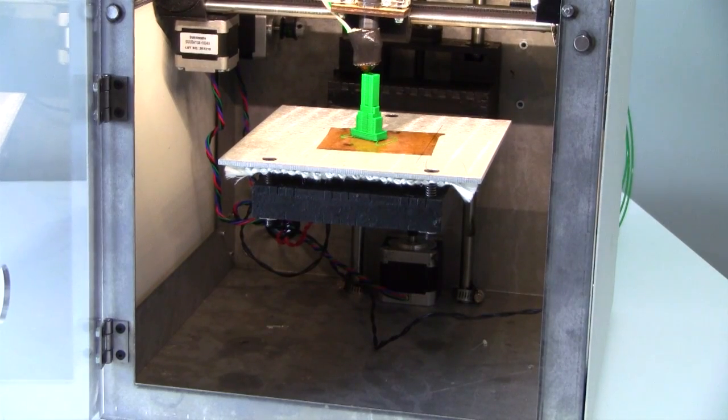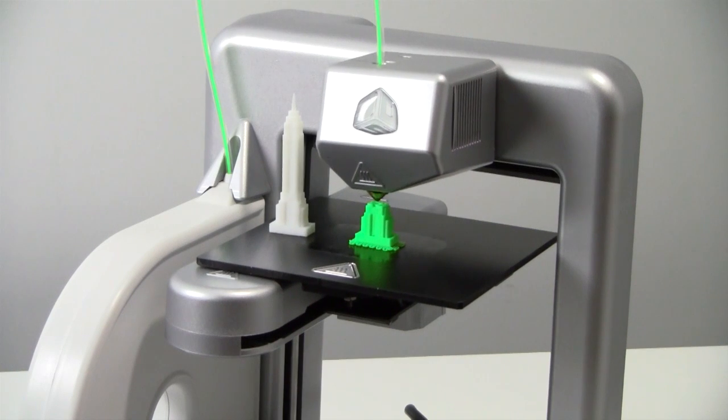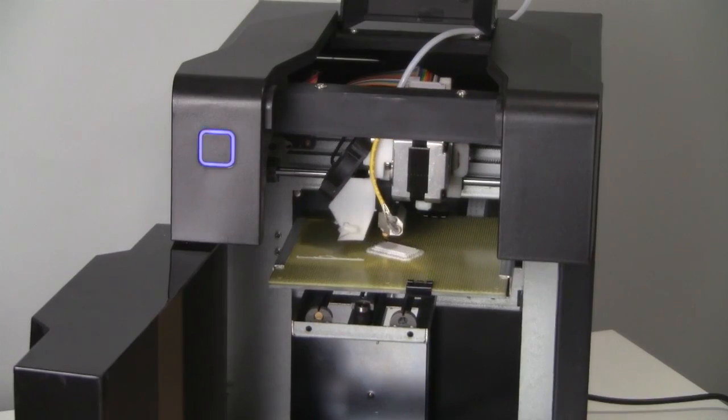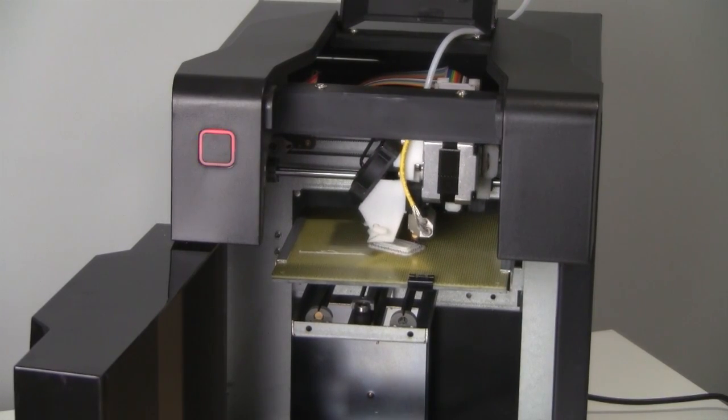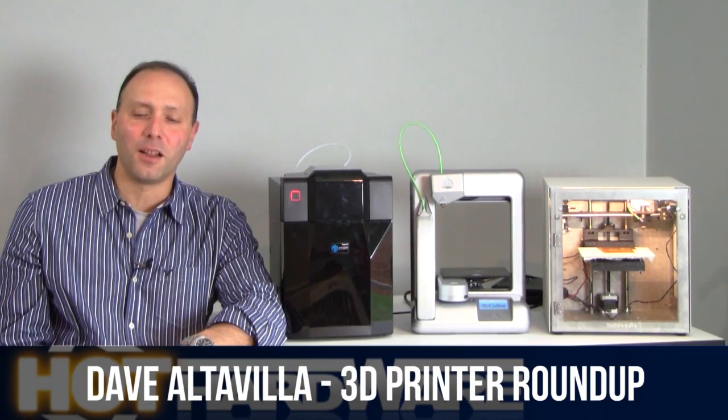We've got machines from Solidoodle—the Solidoodle 2 is here. The Cube 3D from 3D Systems is here, and right next to me is the UP Mini from Delta Microcore. Let's take a look around these machines and show you what they're all about.